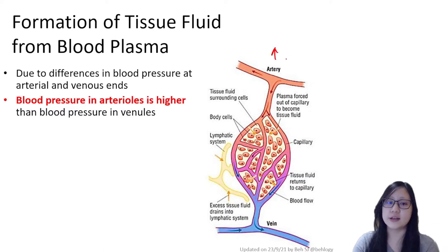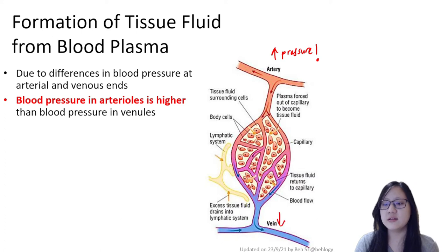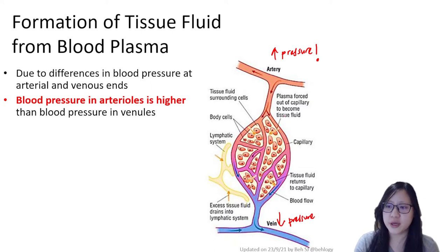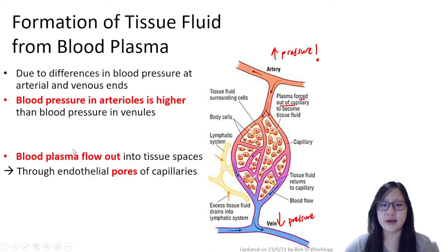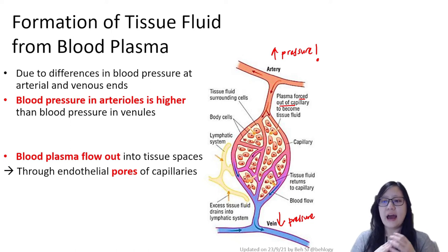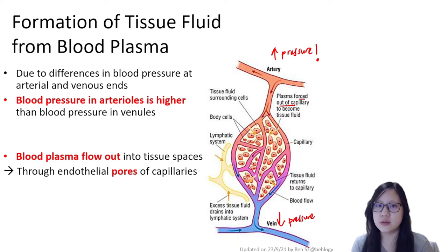The blood pressure at the arterial end is always going to be higher because it's closer to the heart, whereas at the venous end there is lower blood pressure. Due to these differences in pressure, the plasma is forced out of the capillary to become tissue fluid at the arterial end. This blood plasma flows out through endothelial pores of the capillaries.